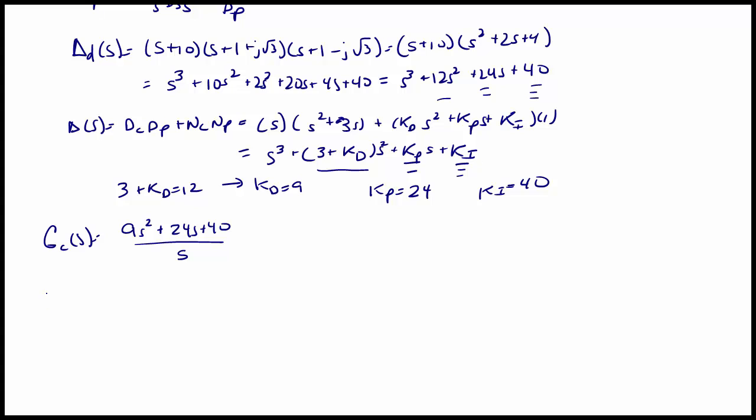The open-loop transfer function, K GC of S GP of S, is equal to K times the quantity 9S squared plus 24S plus 40 over S squared times S plus 3.